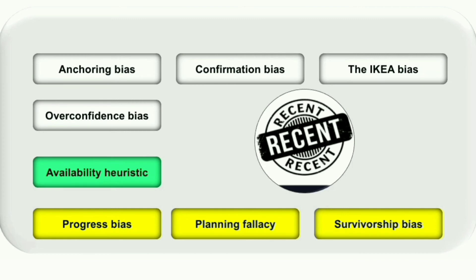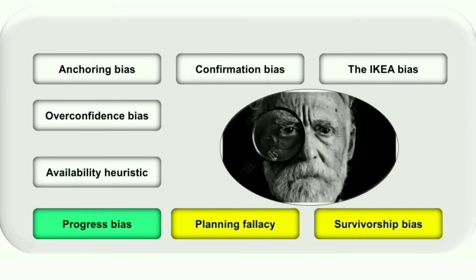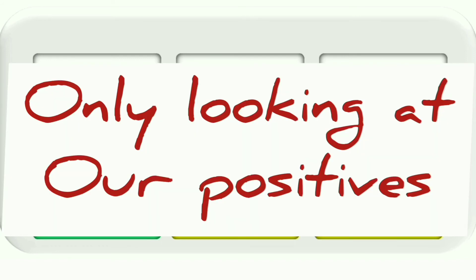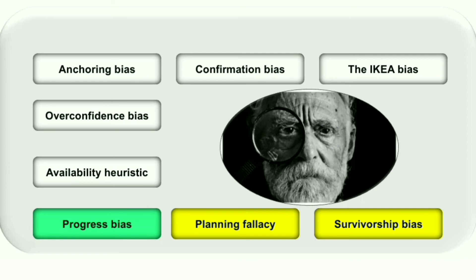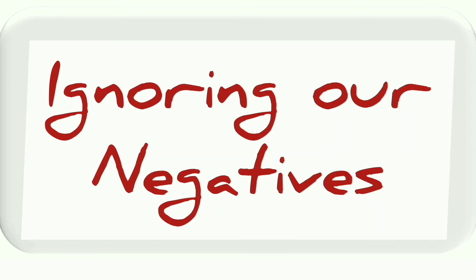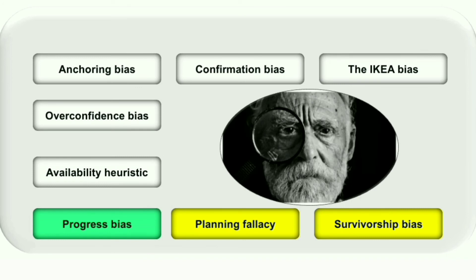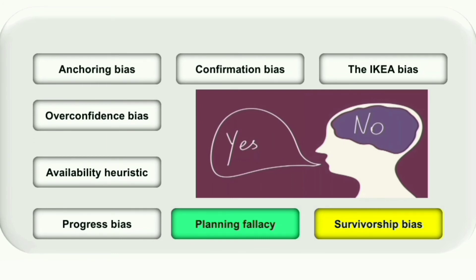The next one is progress bias — the act of overstating our positive actions while ignoring our negative ones. In other words, we give ourselves too much credit for the positive things we have done in the past, and we make decisions based on those past experiences while completely ignoring the bad decisions we have also made. We simply think we have so much experience in a field and decide accordingly.